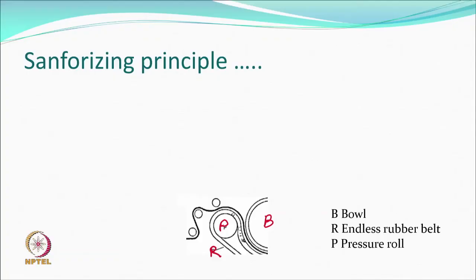Shrinkage due to swelling is handled by a process called sanforization. In this finish, the fabric is pre-shrunk uniformly so that excess warp yarn length is available. When the fabric later swells in washing, it does not shrink further because compressive shrinkage has already been done. This is a special finish — fabrics labeled as sanforized will clearly mention it and cost more.